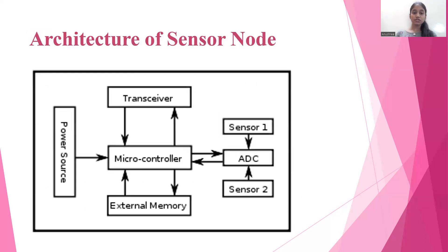The architecture for sensor nodes includes a transceiver, microcontroller, external memory, power source, sensors, and ADC. A transceiver is a device that is a combination of a transmitter and receiver, used to transmit and receive signals at the same time.